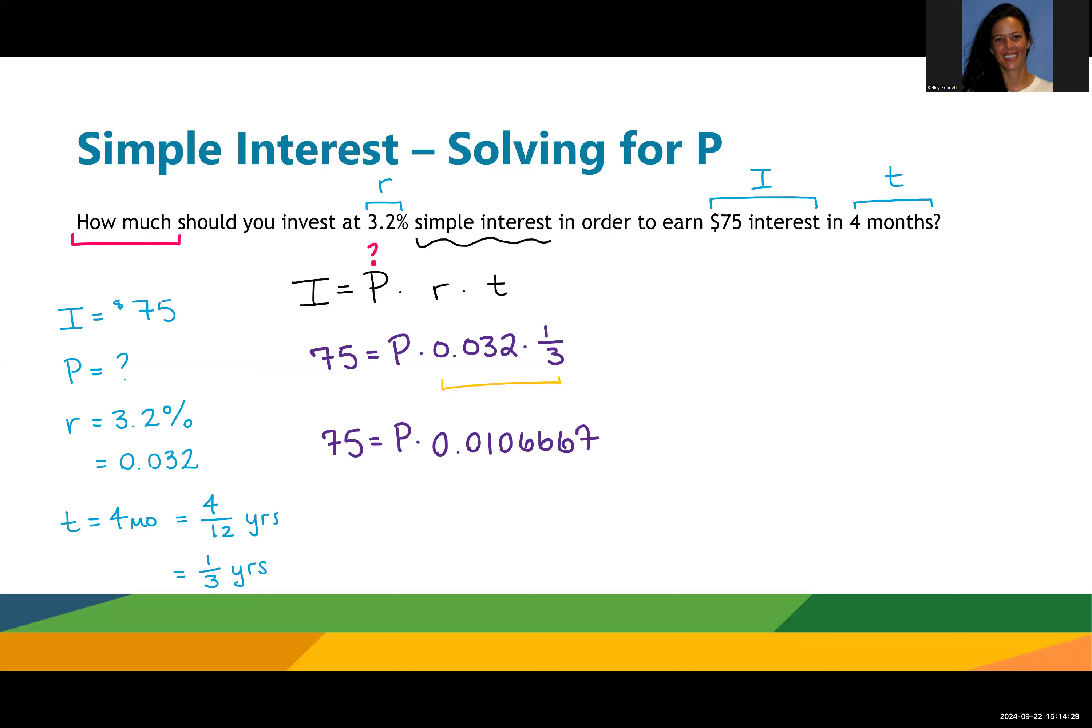Keep your decimals nice and long until the very end. I'm going to divide both sides by 0.0106667. On the right, that's going to allow us to cancel out, leaving only P.